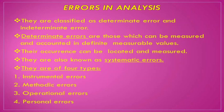What are indeterminate errors? Their origin cannot be determined — we cannot find out where they came from or how they occurred. So first of all, determinate errors can be located and measured. They are also known as systematic errors. Determinate errors are of four types: instrumental, methodic, operational, and personal.